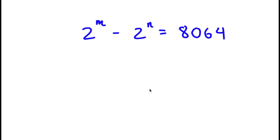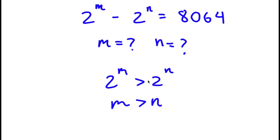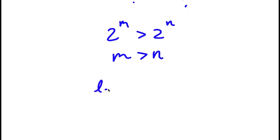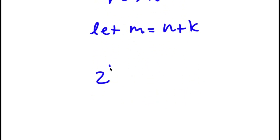In this equation I have 2 to the power of m minus 2 to the power of n equals 8,064, and I need to find the values of m and n. Because 2 to the power of m minus 2 to the power of n is positive, we know that m is greater than n. So I'm going to let m equal n plus k, where k is a positive integer. If m equals n plus k, then I have 2 to the power of n plus k minus 2 to the power of n equals 8,064.